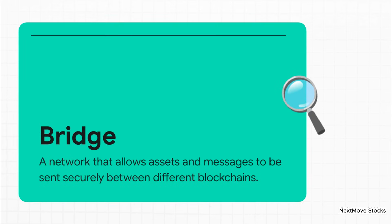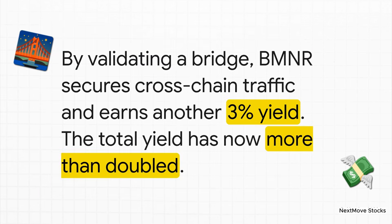Next up, layer three — the bridge. The crypto world is this huge universe of thousands of different blockchains, and for that universe to work, they all need to be able to talk to each other, to send money and data back and forth safely. That's what a bridge does. Historically, bridges have been a huge weak spot, getting hacked all the time. The fix? Securing them with a massive, decentralized group of validators. So our operator can choose to validate for one of these big bridge networks too. Every single time somebody sends money from one chain to another, a validator has to sign off. The amount of traffic on these bridges is just enormous, so the fees can be really significant. Let's pencil in another 3% yield for this job. We're at a 9% total yield in our model — more than double where we started.